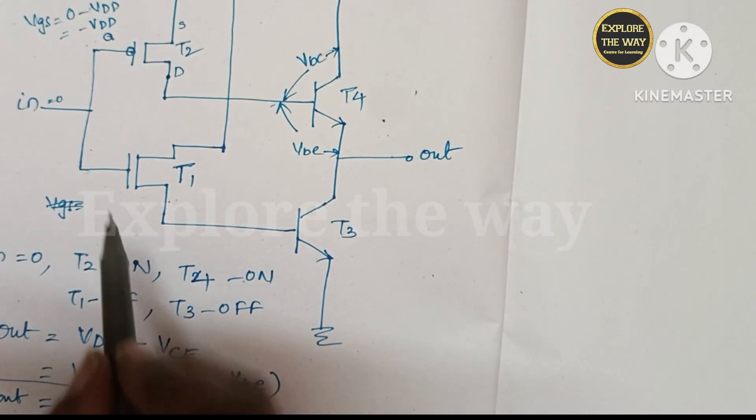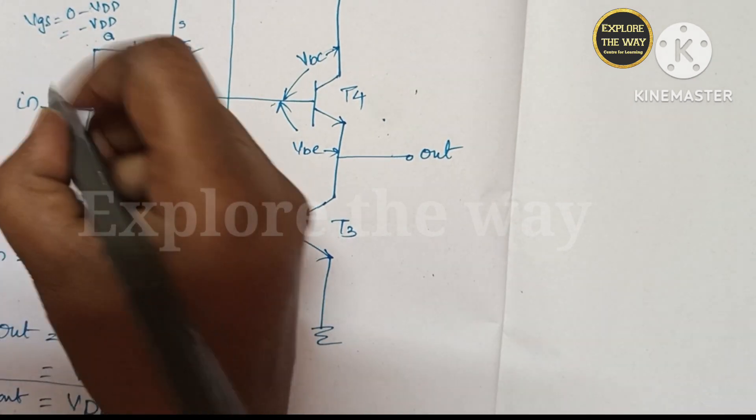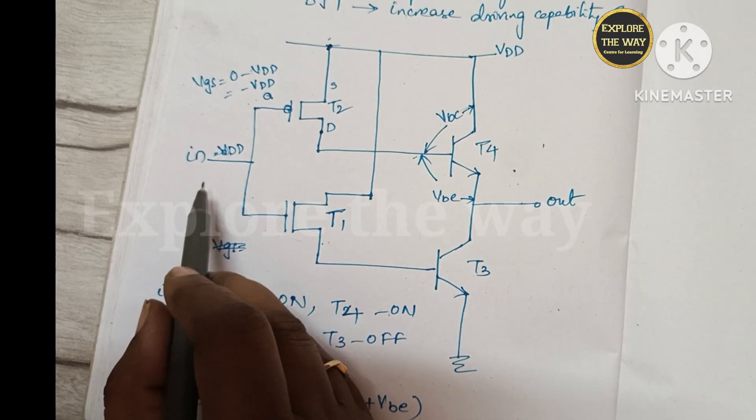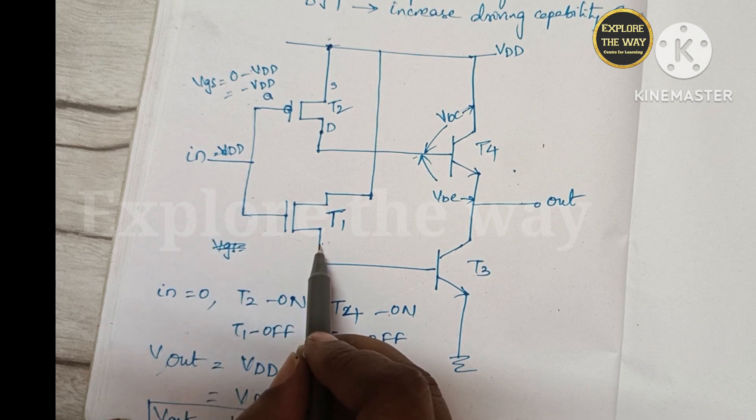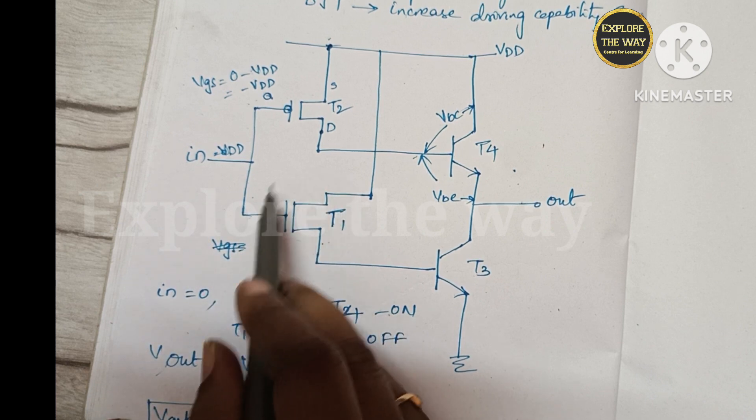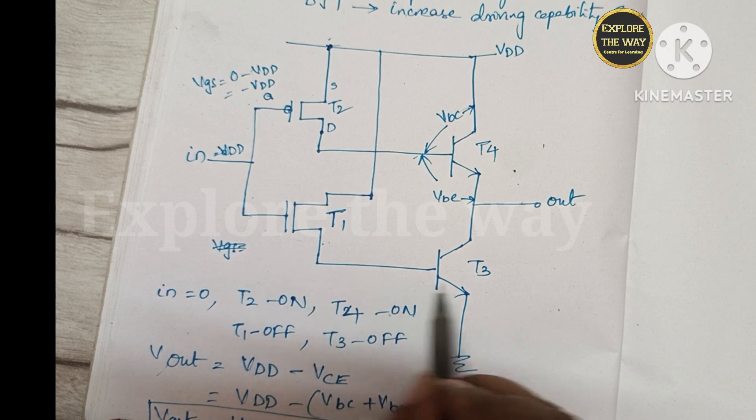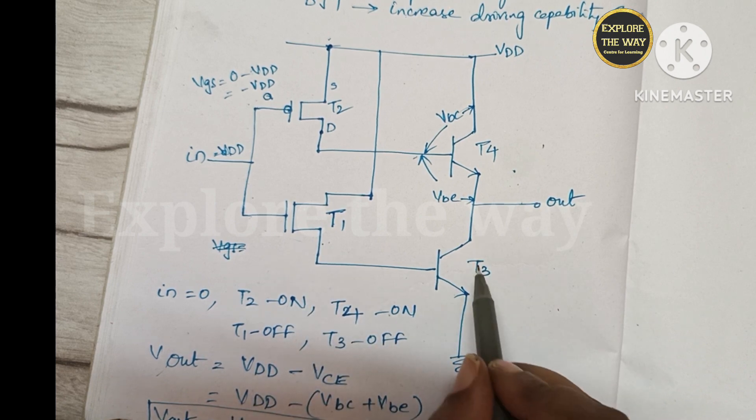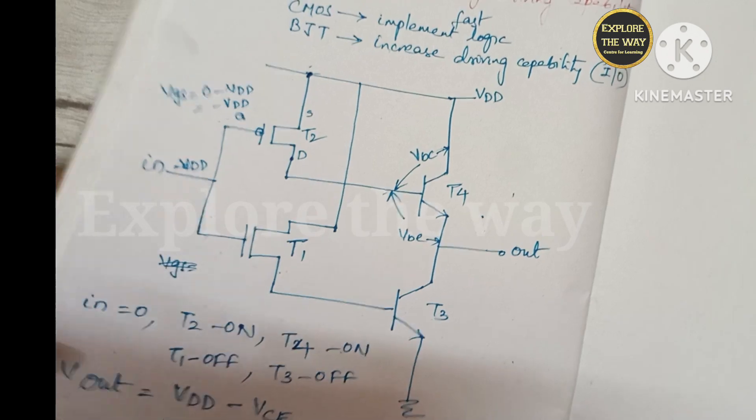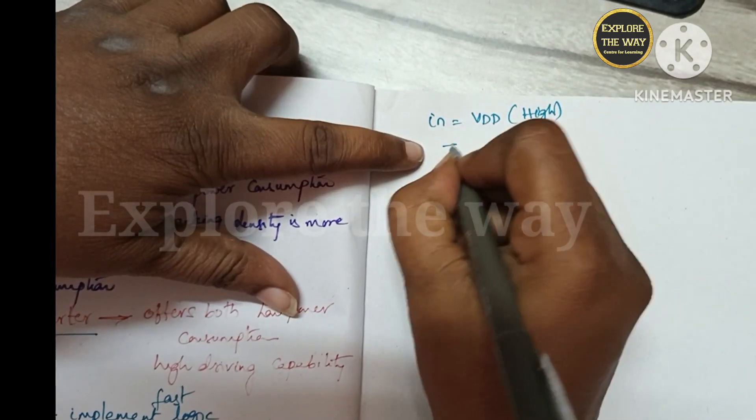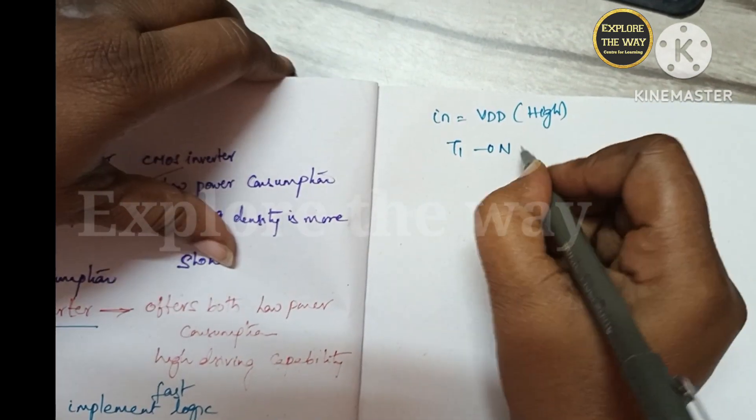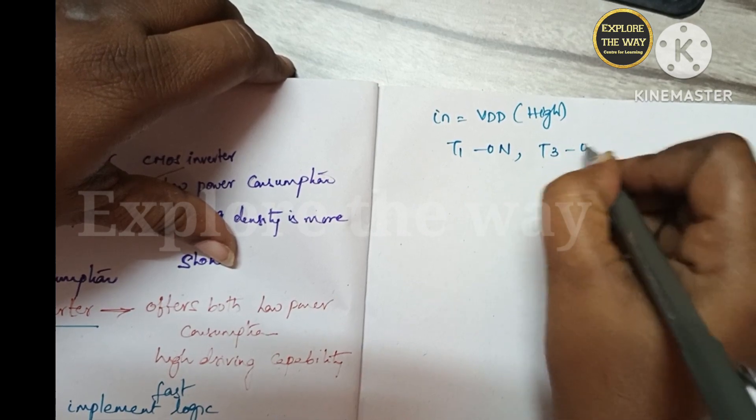Coming to bottom transistors, when VIN equal to VDD, the VGS for T1 is positive, thereby T1 will turn on and which drives T3. So T3 also turned on. Here T1 turn on. T3 also turn on.